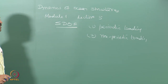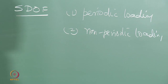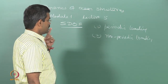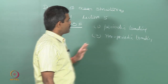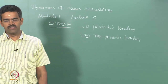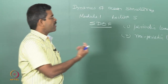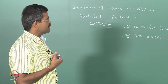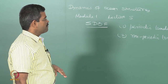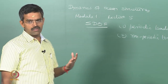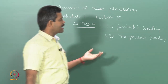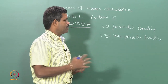In the earlier class, we said there are two approaches: deterministic and non-deterministic. The deterministic approach will give you the time history of the responses. You can also find out the stresses and displacements as derived quantities, whereas in the non-deterministic approach, you will get statistical responses. You will not be able to derive them; you have to do them independently.